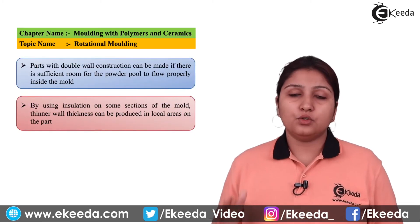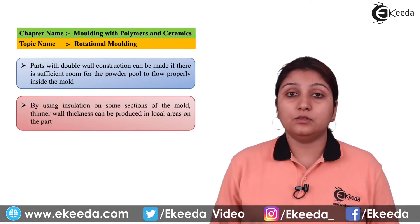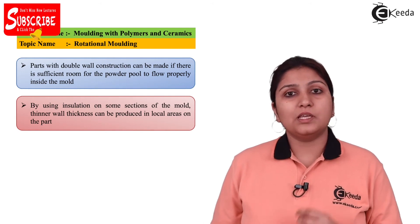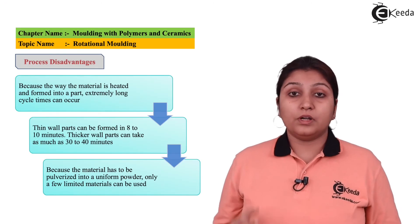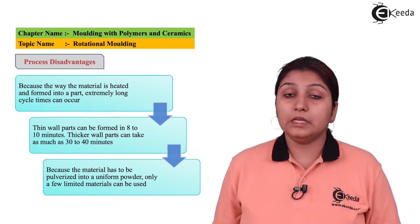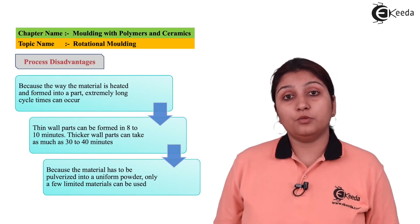Parts do not stick to the wall as it is rotating continuously, so the desired thickness of the object can be easily obtained. Also, double-walled parts can be made easily, and insulation can be provided to the parts in rotational molding.